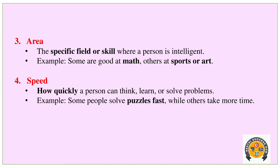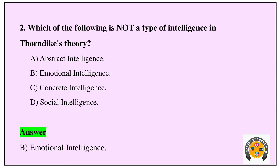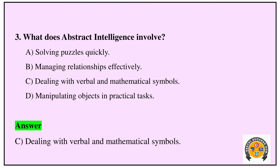Now let's have a practice question. Who proposed the Multi-Factor Theory of Intelligence? Edward Thorndike. Which of the following is not a type of intelligence in this theory — given abstract, concrete, and social — emotional intelligence is the answer. Third question: What does Abstract Intelligence involve? Abstract Intelligence deals with verbal and mathematical symbols.